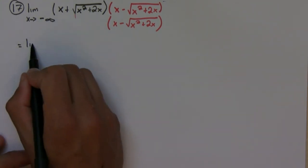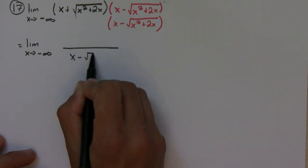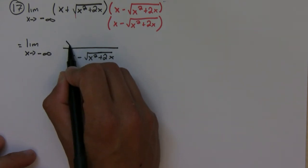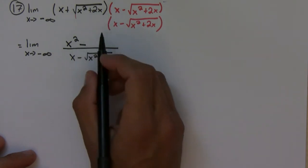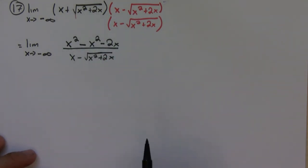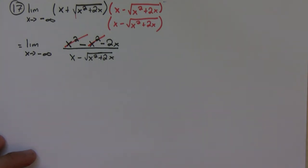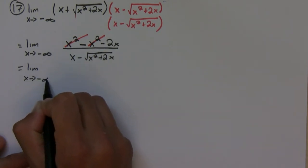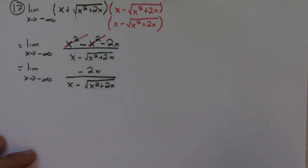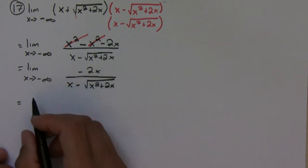If we multiply all this out, from the denominator we get x minus square root of x squared plus 2x. On the numerator we get x squared minus the entire inside, which is x squared minus 2x. Let's simplify — x squared minus x squared cancels, and we're left with negative 2x over x minus square root of x squared plus 2x.